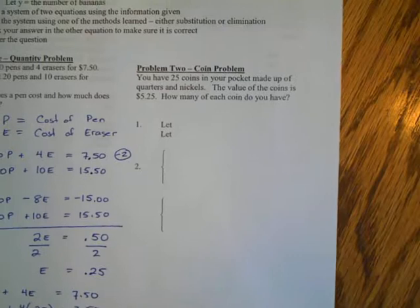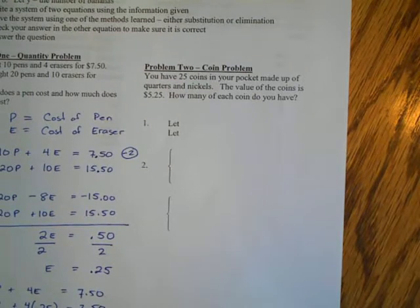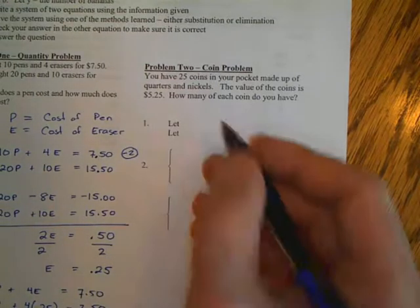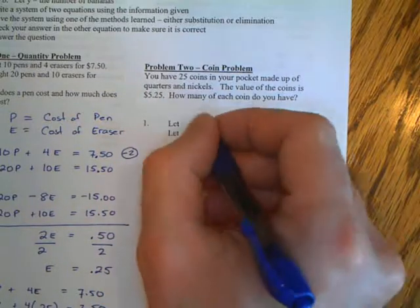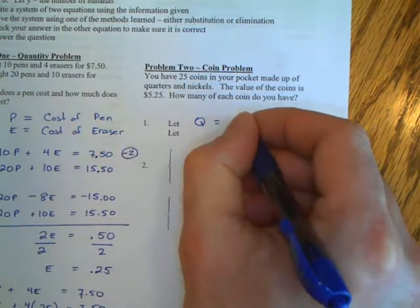And so we should answer the problem with words and we should say an eraser costs 25 cents and a pen costs 65 cents. We now look at example 2.